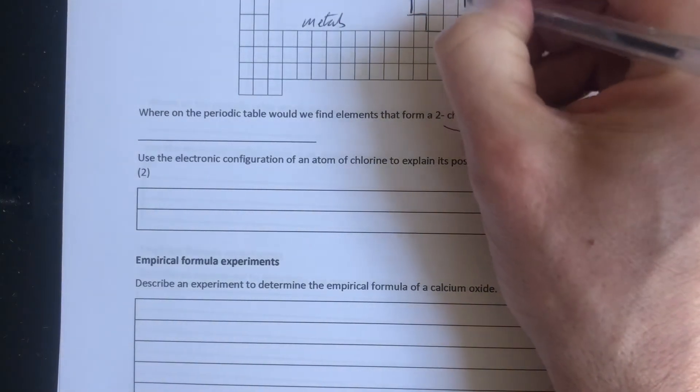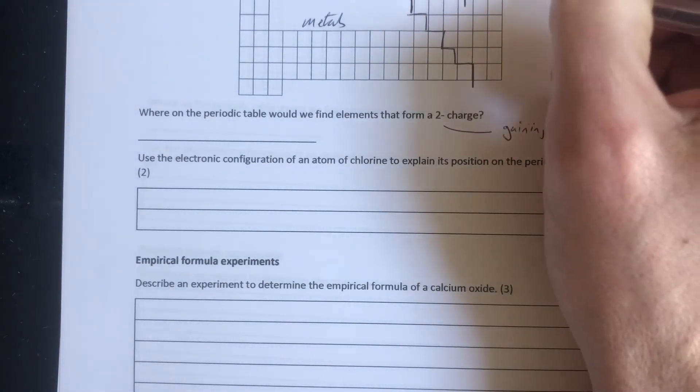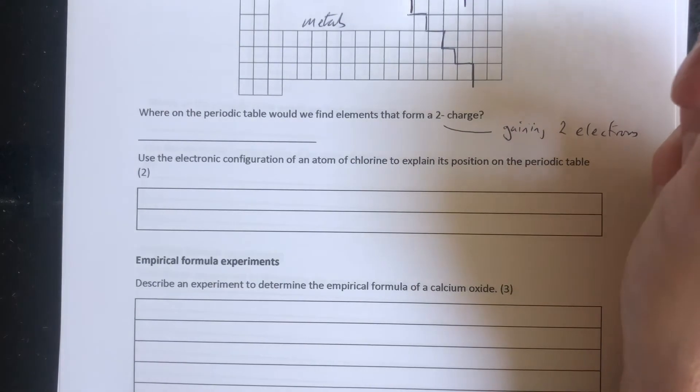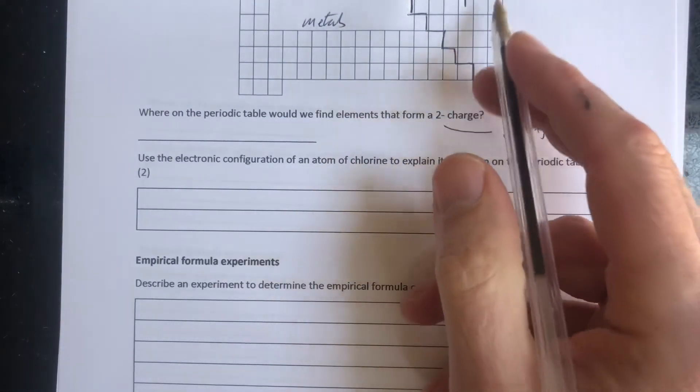So elements in group six here, group six, have six electrons on their outer shell, because the group number tells us how many electrons on the outer shell. So they're going to gain two electrons to be group eight.